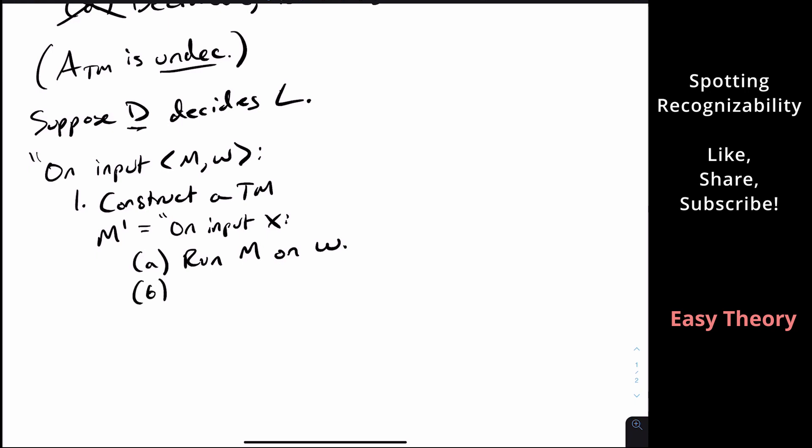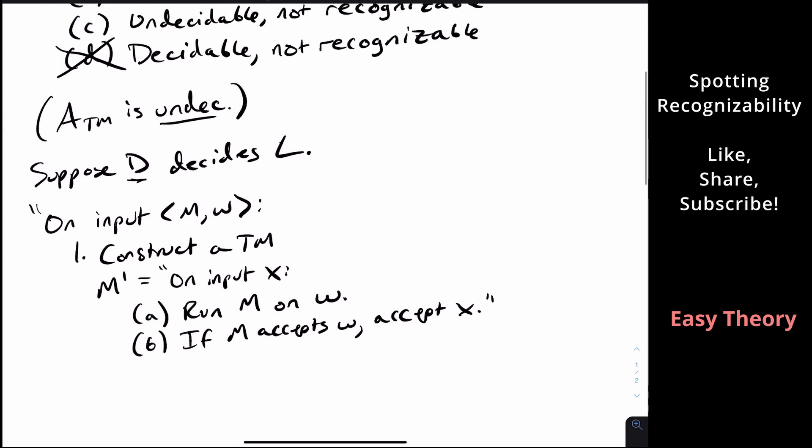And step B, if M accepts W, we will accept x. So we'll say yes on x. And if it runs forever, we don't care. If it rejects, we don't accept x. So what are the two behaviors?